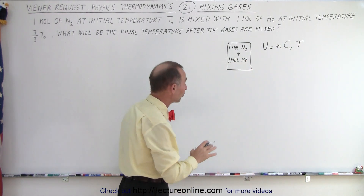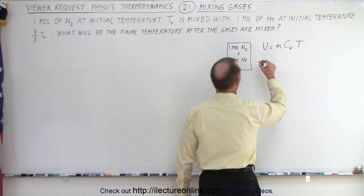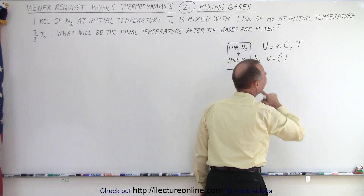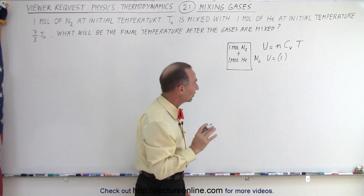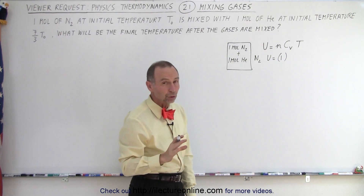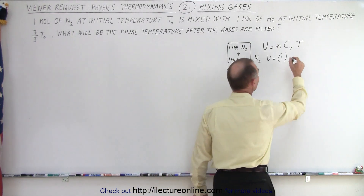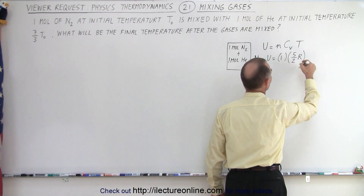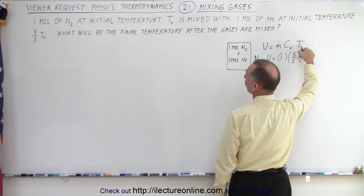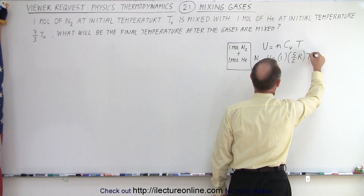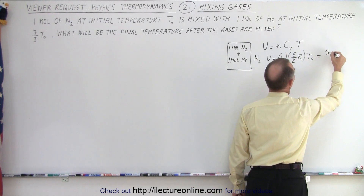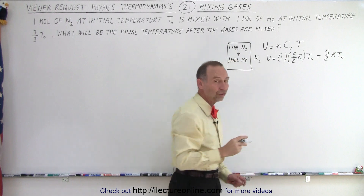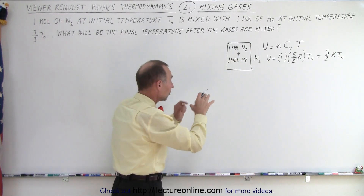Let's work that out for both gases. First, for nitrogen, the internal energy is going to be 1 mole. Now what's Cᵥ for nitrogen? It's a diatomic molecule, so for a diatomic molecule it's 5/2 times the gas constant R. The initial temperature is T₀, so that gives us 5/2 R T₀. That's the energy that the nitrogen brings into the system.